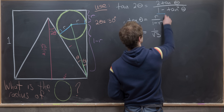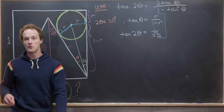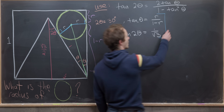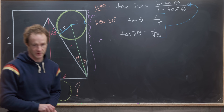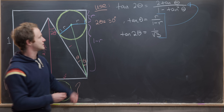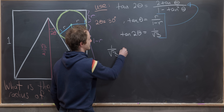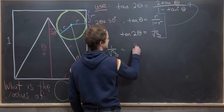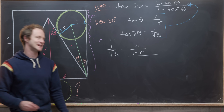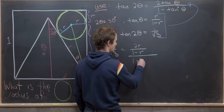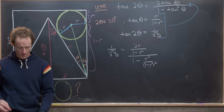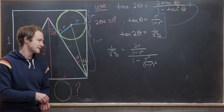Now we plug into our double angle formula. We have 1/√3 = 2·tan(θ) / (1 − tan²(θ)). Substituting tan(θ) = r/(1−r), the numerator becomes 2r/(1−r) and the denominator becomes 1 − r²/(1−r)².